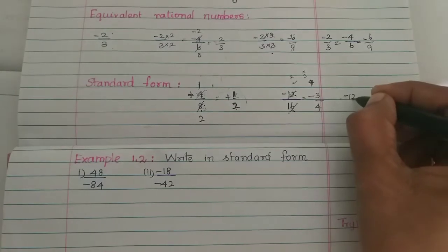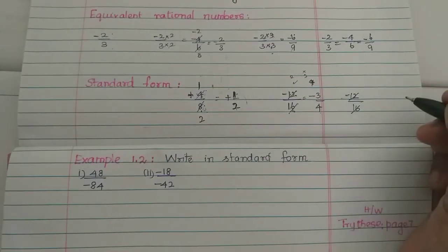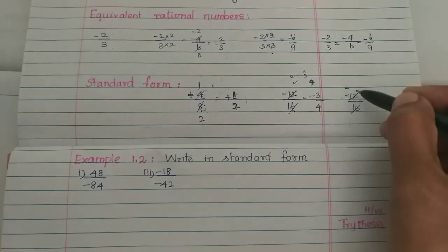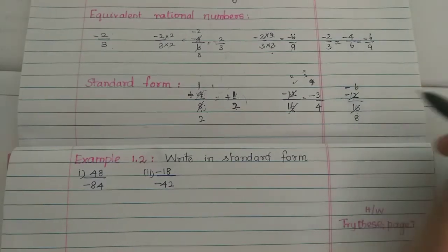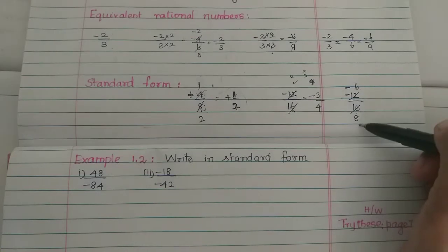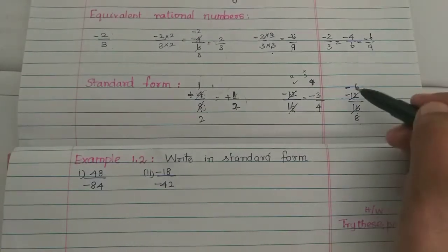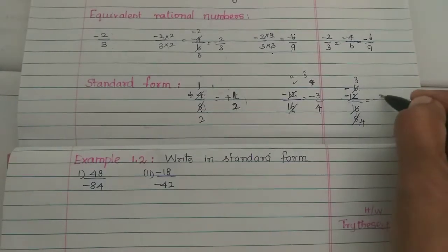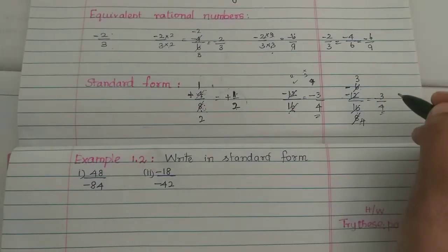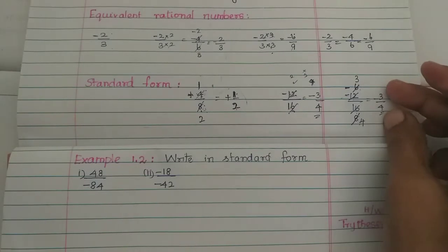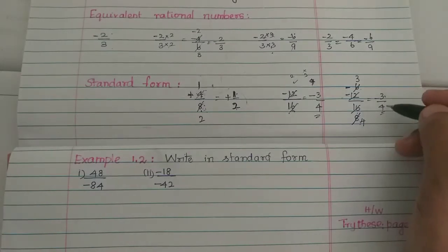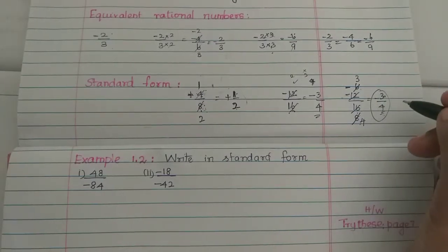How do you simplify minus 12/16 step by step? First, divide by 2: 12 and 16 both go into the 2 times table. That gives 6 and 8. Then 6 and 8 are also in the 2 times table, giving 3 and 4. So minus 12/16 simplifies to minus 3/4, which is the standard form.